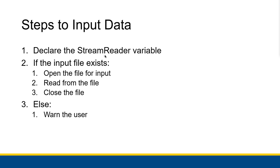You declare the StreamReader variable. The second thing you do — and you do this before you even try to open the file you want to read — is check to see if the input file exists. The reason is that if you try to open up a file that doesn't exist, you run into an error. If it does exist, we can actually work with it. If it does not exist, then you warn the user, give them a message box, and just get out of the function entirely without trying to do anything with that file.